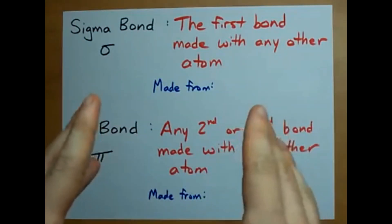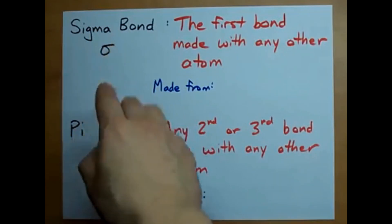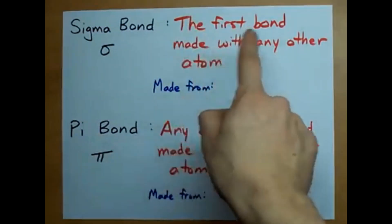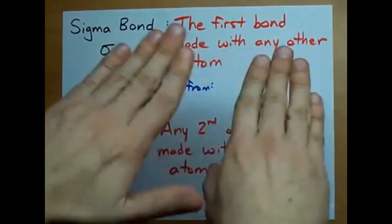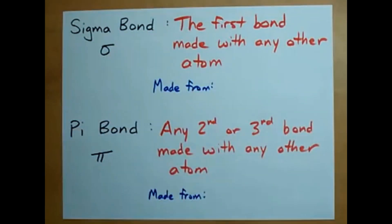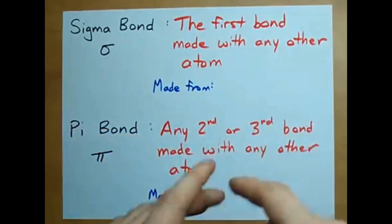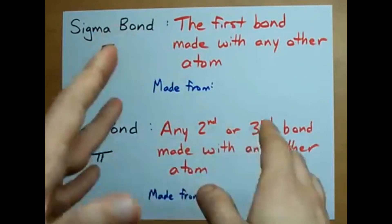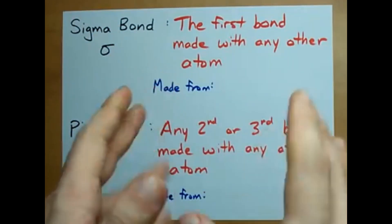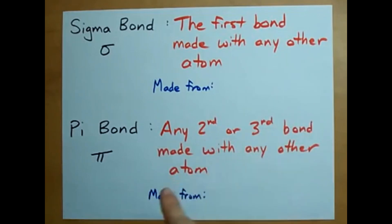Here's what you need to know: sigma bonds between carbon and anything else are always the first bond that carbon makes with any other atom — the first one is always sigma. If carbon makes multiple bonds with an atom, like a carbon-carbon double bond, a carbon-carbon triple bond, or a carbon-nitrogen triple bond, any second or third bond it makes with an atom is going to be a pi bond.